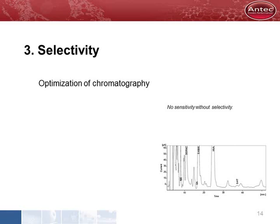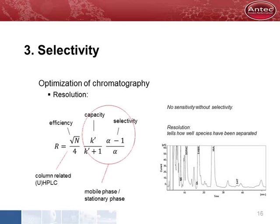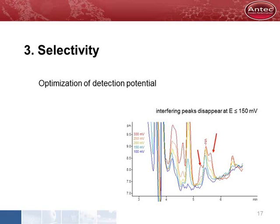Improved sensitivity is useless if peaks are not well separated. Separation of peaks is really important, and this can be difficult and time-consuming, especially in case of multi-component analysis. Resolution tells how well substances have been separated. The equation for resolution shows the parameters of importance. First, we select a column with sufficient efficiency and capacity, or retention. Next, we optimize the mobile phase to get our substances separated. Another way to improve selectivity is via the detection potential — when lowering the potential, the shouldering peaks disappear and the noradrenaline peak can be analyzed.